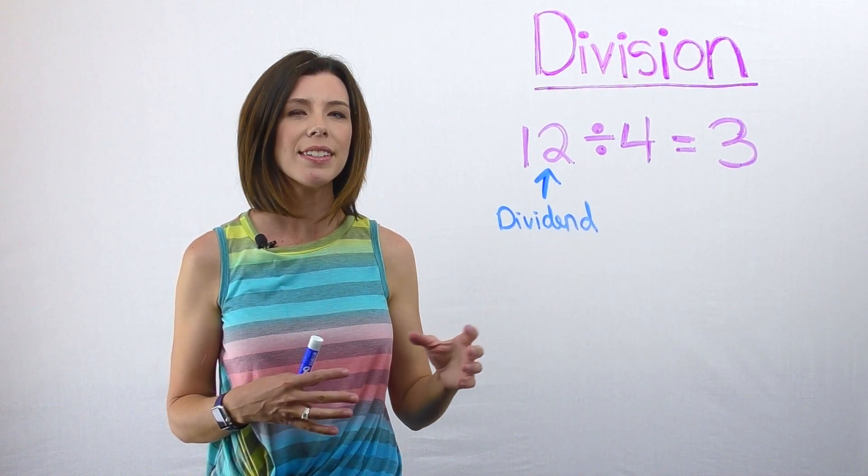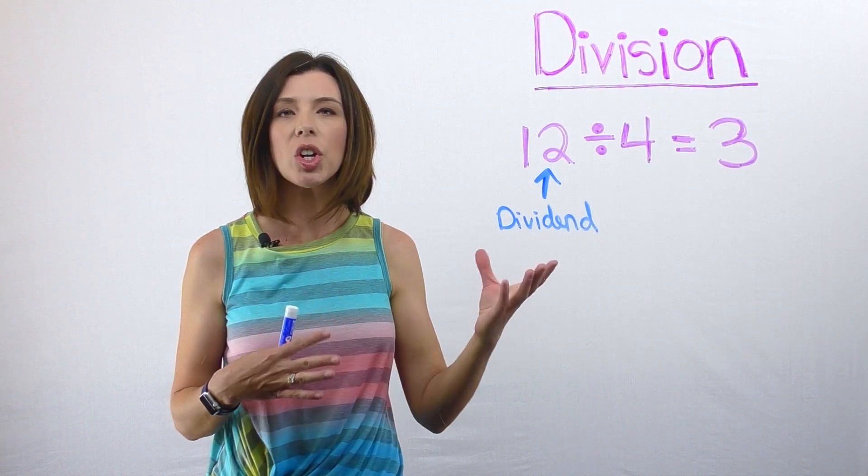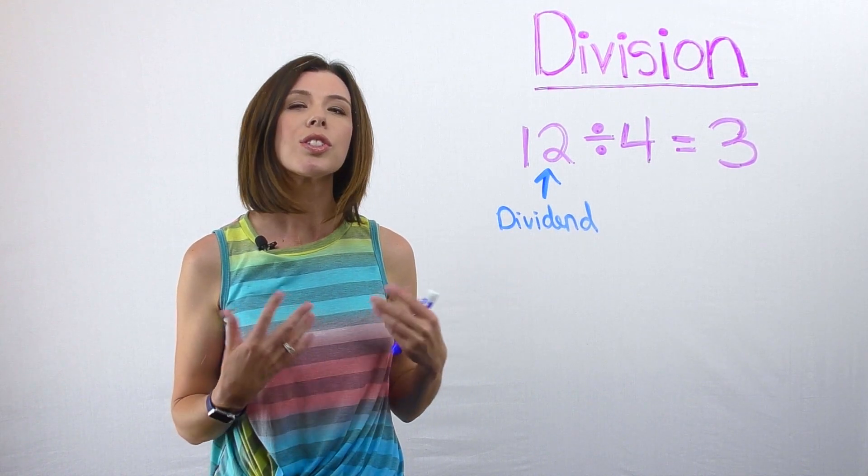You can think of this number as the number that we are essentially passing out or dividing up. It's called the dividend. That's what we're starting with.